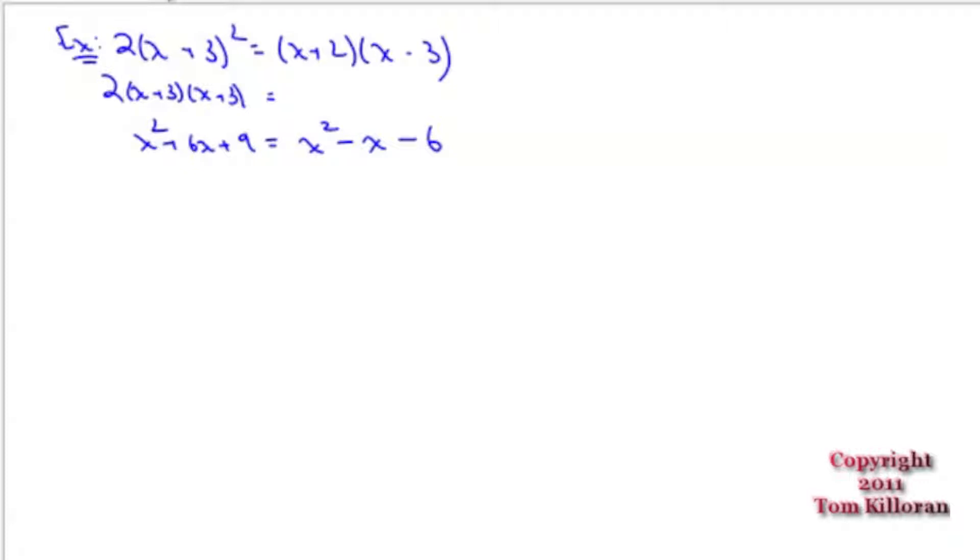Let me just put this here. 2. That'll fix it. I need that. Otherwise the x squared is going to change. So this side becomes 2x squared plus 12x plus 18 equal to x squared minus x minus 6. What do you do now? Get them all on one side. Keep the x squared positive. Subtract x squared, add x, add 6. This becomes x squared plus 13x plus 24 equals 0.